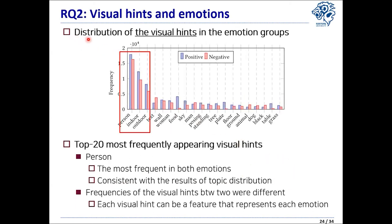This slide shows the distribution of the top 20 most frequently appearing visual hints. Same as the previous result, person appeared most frequently, but except for the top three topics, the frequency of other visual hints was quite different between groups, which means that each visual hint can be a feature that represents each emotion group.